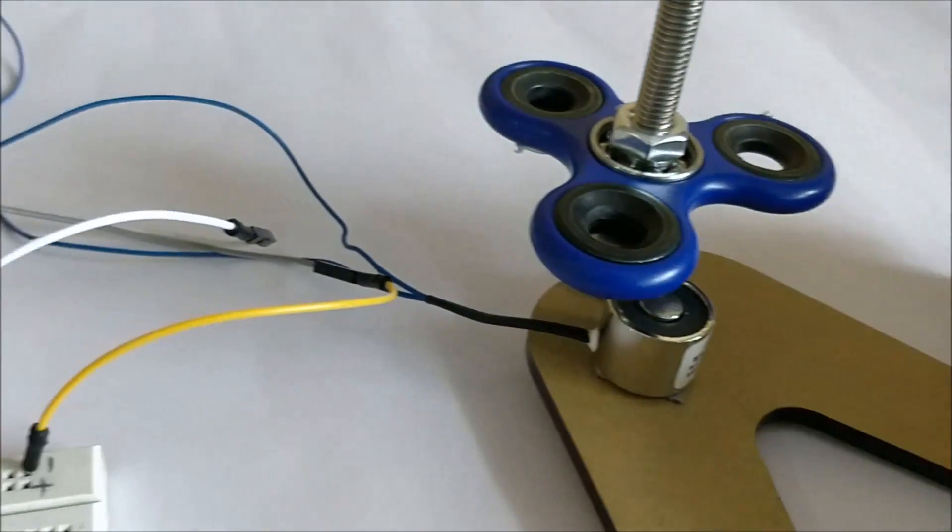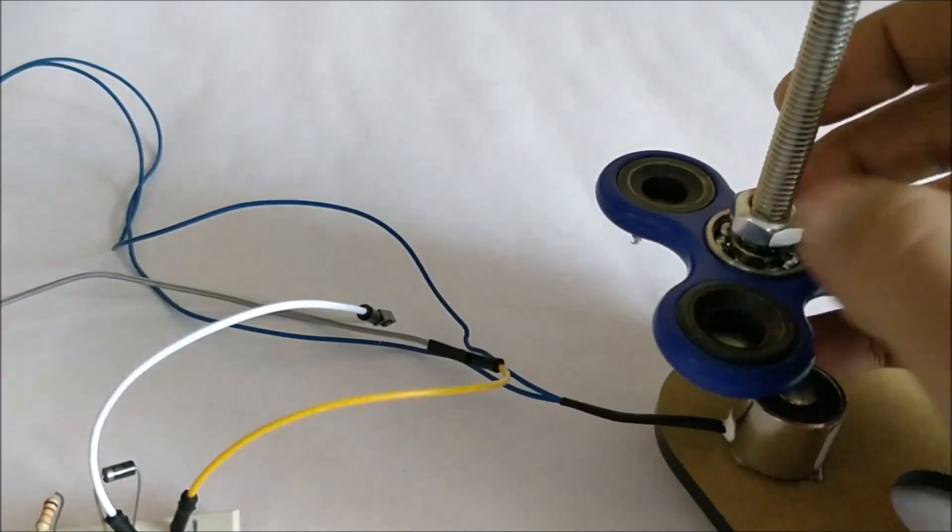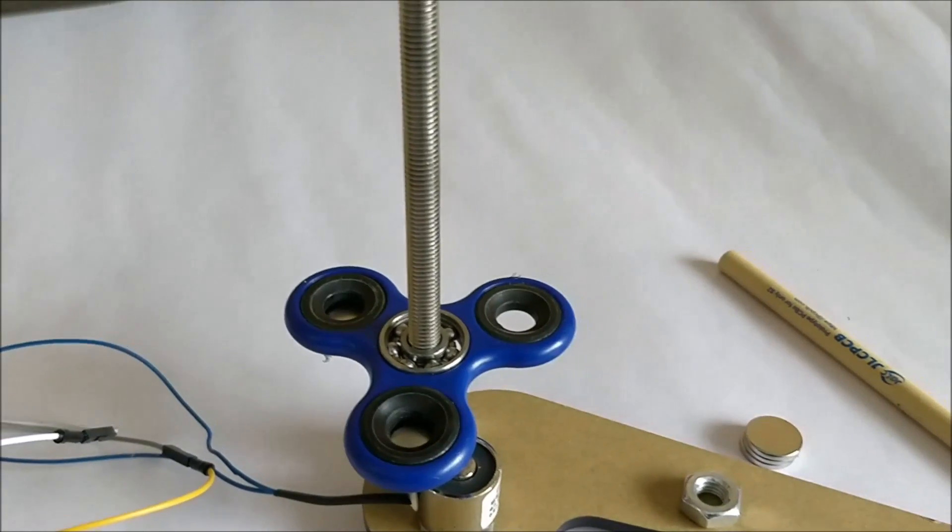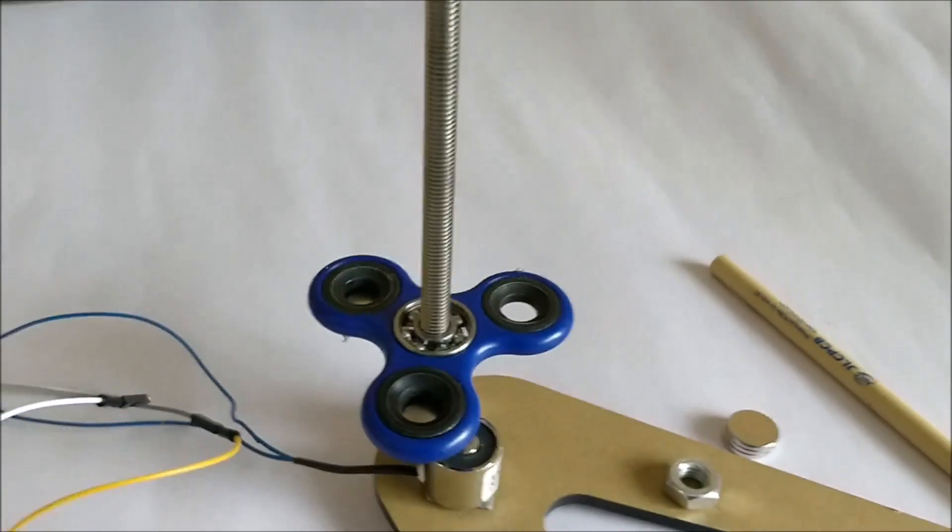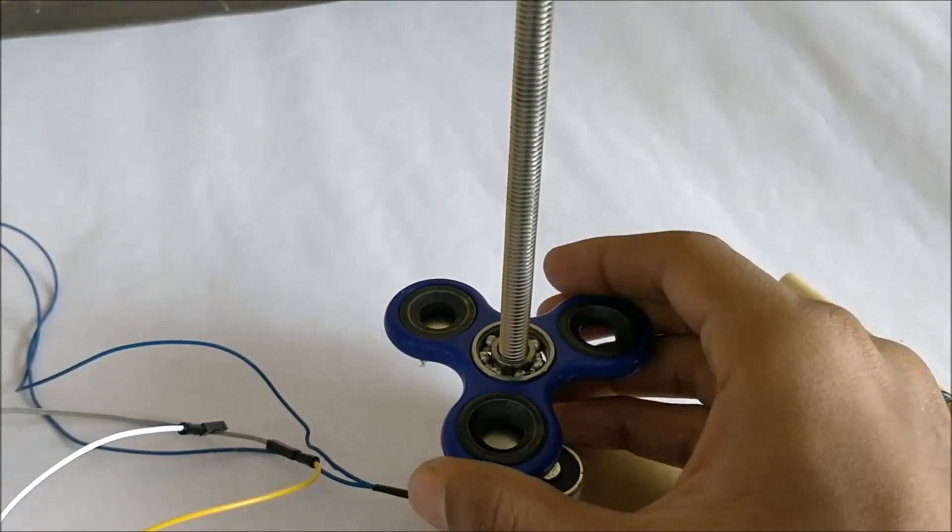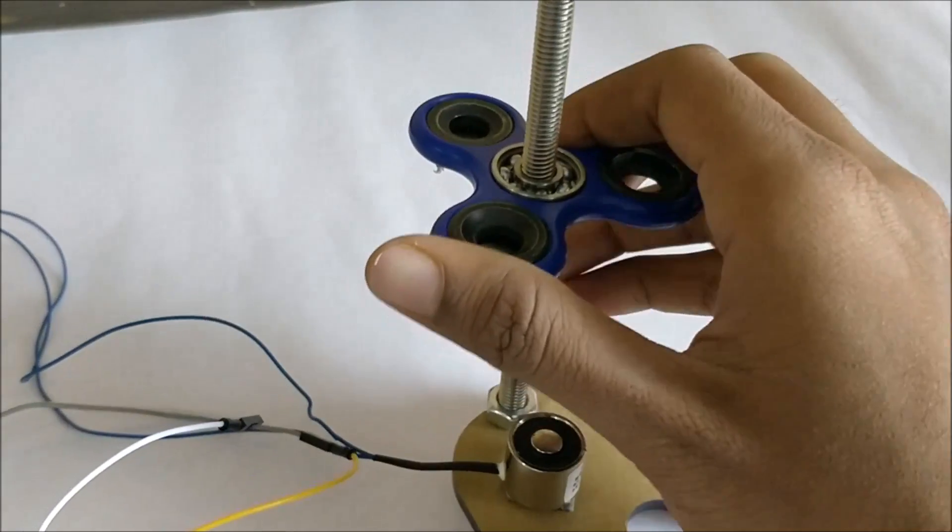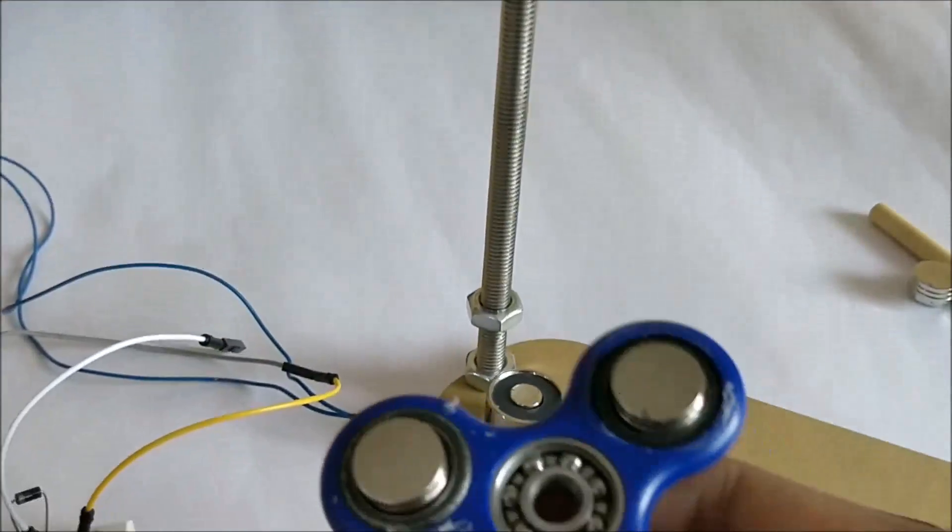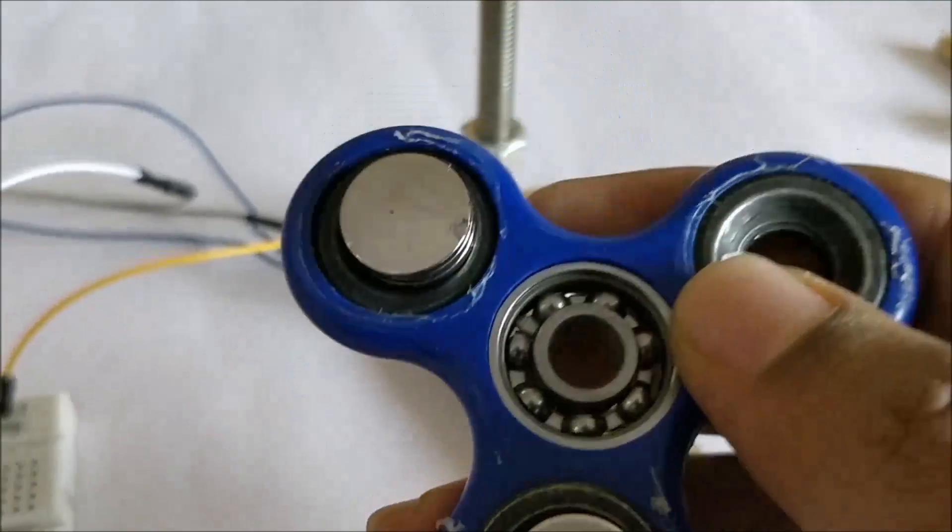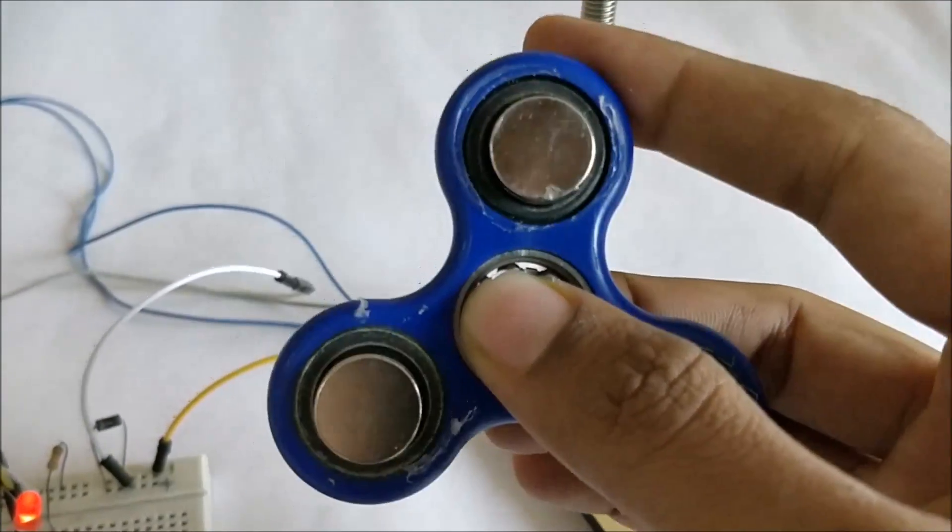So this is just an arrangement to keep it intact. Let me remove the bolt. So I have just removed this thing from this threaded thing. Now let me take it out. So as you can see, it has a bearing inside which makes it very easy to make it as a motor.